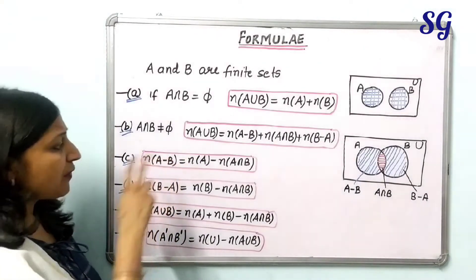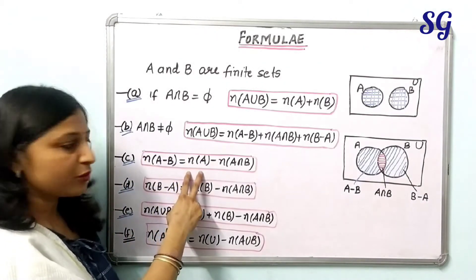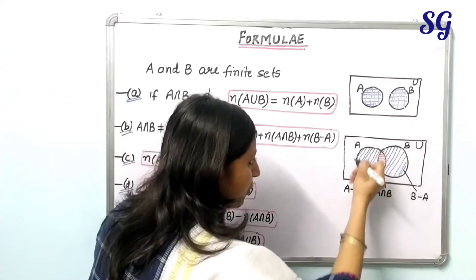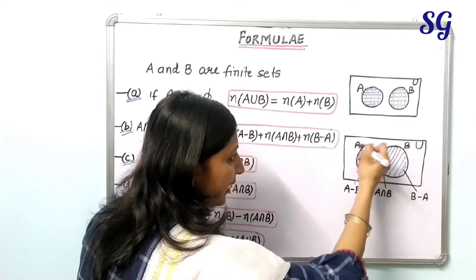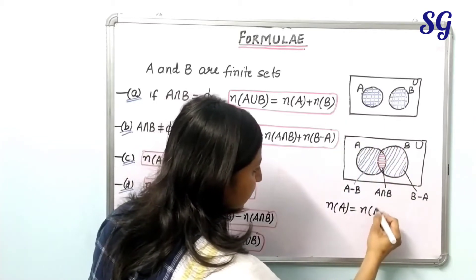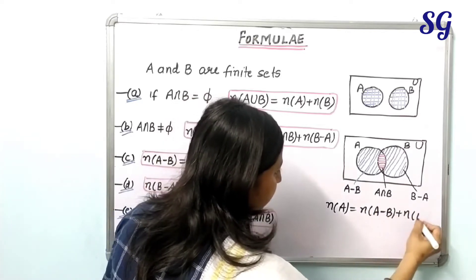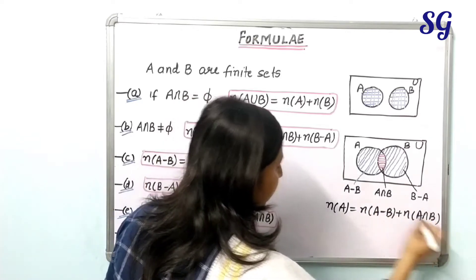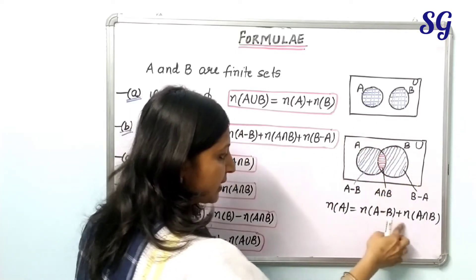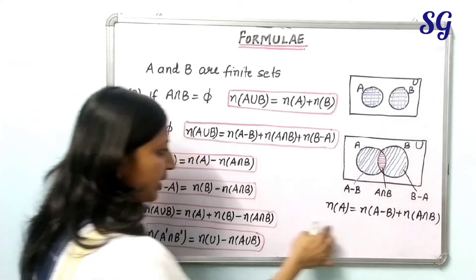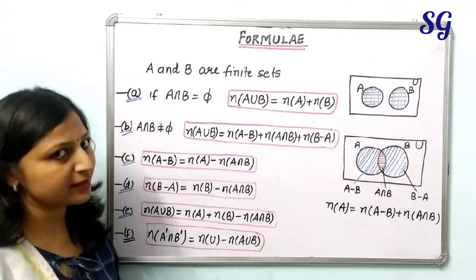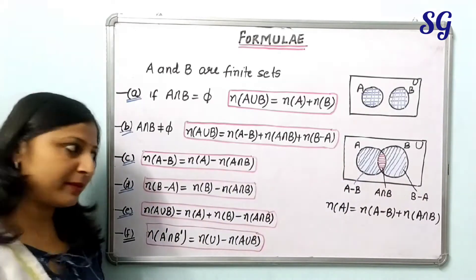Third formula: the number of elements in A minus B equals the number of elements in A minus the number of elements in A intersection B. We can see that the whole circle represents A, and the number of elements in A equals the number of elements in A minus B plus the number of elements in A intersection B — that is, the blue region plus the red region. From here we derive that n(A minus B) = n(A) - n(A∩B).